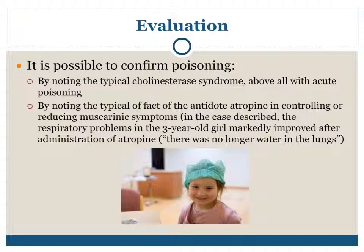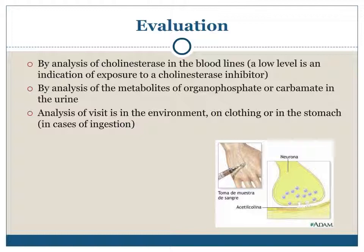Evaluation. It is possible to confirm poisoning by noting the typical cholinesterase syndrome, above all with acute poisoning; by noting the typical effect of the antidote atropine in controlling or reducing muscarinic symptoms — in one case described, respiratory problems in a three-year-old girl markedly improved after administration of atropine; by analysis of cholinesterase in the blood; and by analysis of metabolites of organophosphates or carbamates in the urine, as well as analysis of residues in the environment, on clothing, or in the stomach in cases of ingestion.